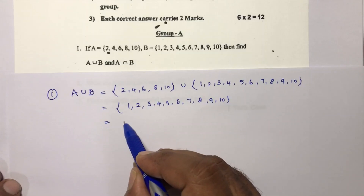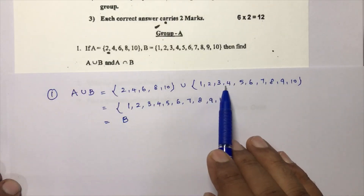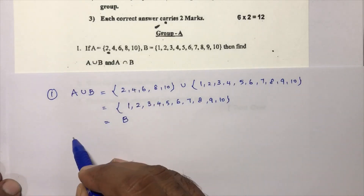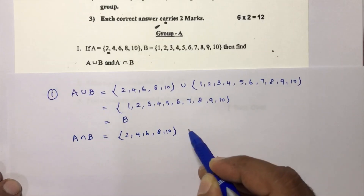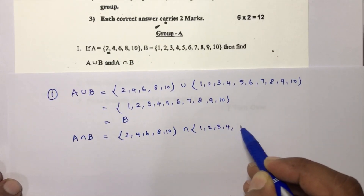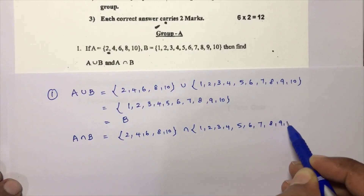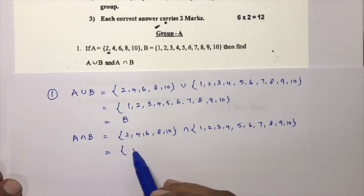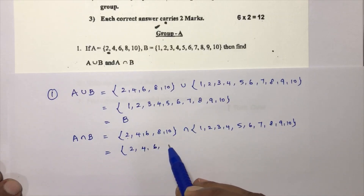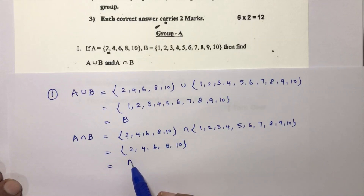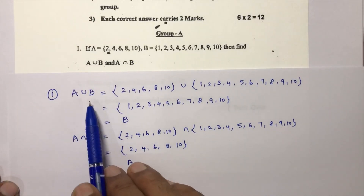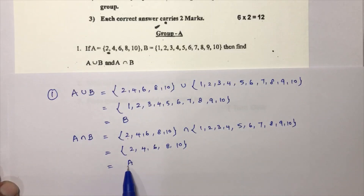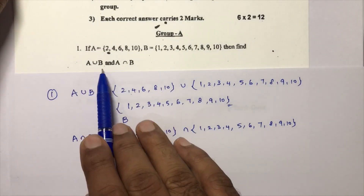If this comes as an MCQ, A union B is nothing but B, because {1, 2, 3, 4, 5, 6, 7, 8, 9, 10} is B. For A intersection B — the common elements in both sets are {2, 4, 6, 8, 10}, which is nothing but A. So what we observe: A union B = B and A intersection B = A, because A is a subset of B. This is the final answer.